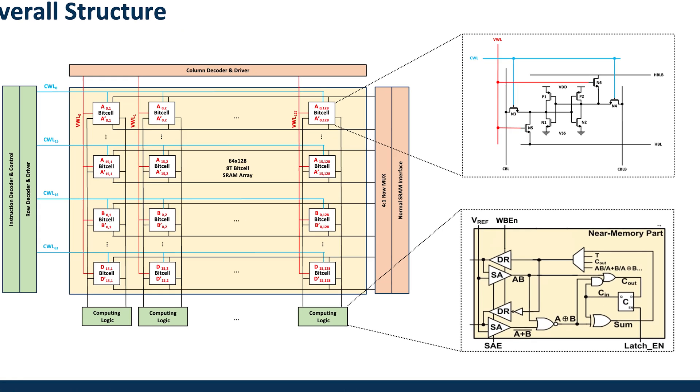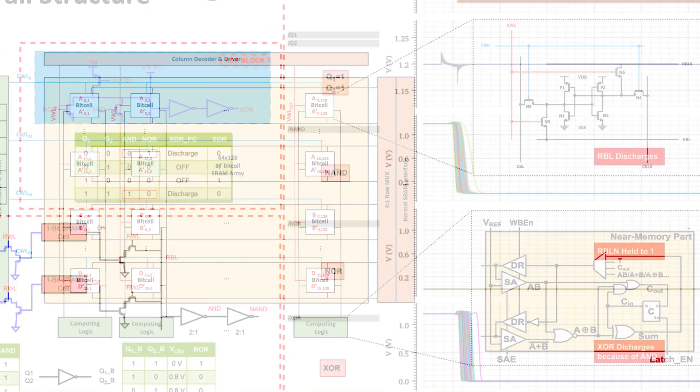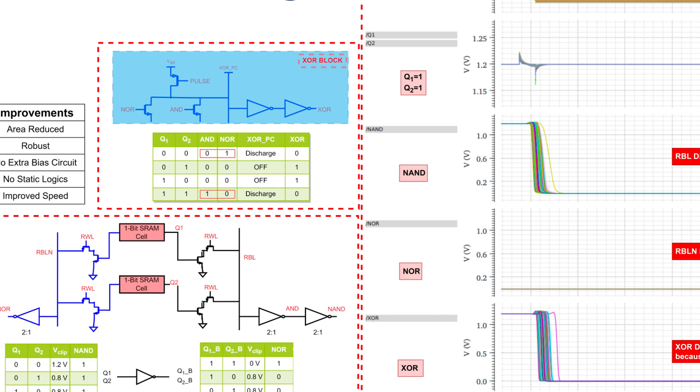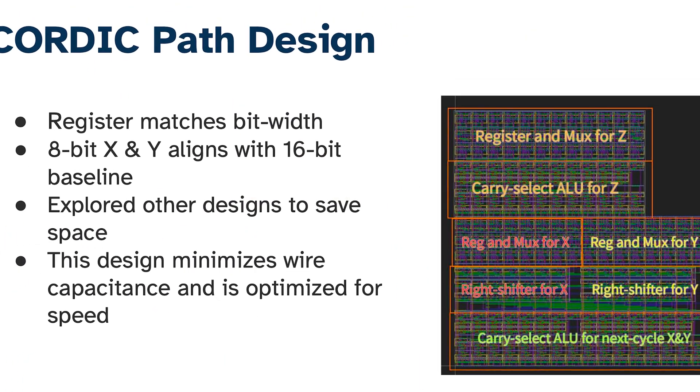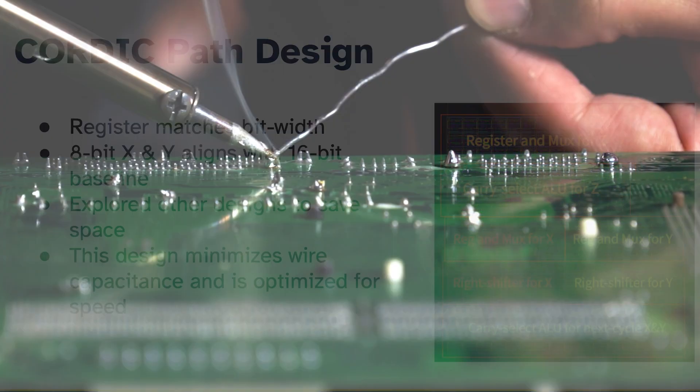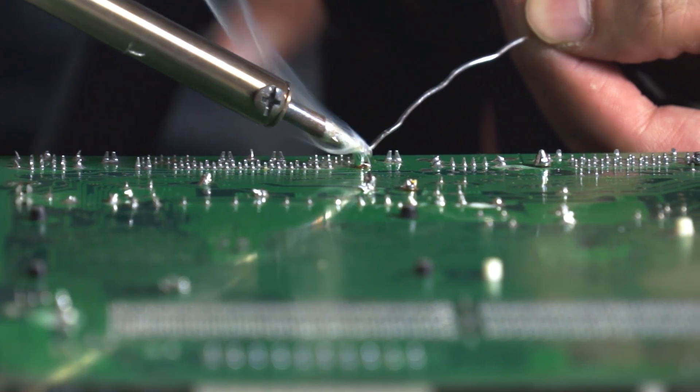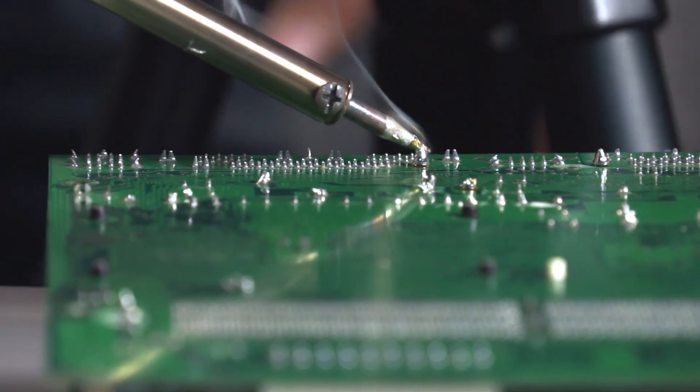By the end of the course, students will have a completed processor design that is essentially ready to be fabricated or manufactured. They would need to go on to another course to do that fabrication and testing — the follow-on class is called 627, or VLSI Design 2.